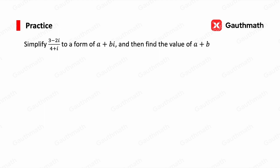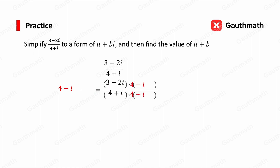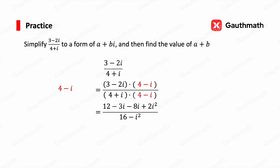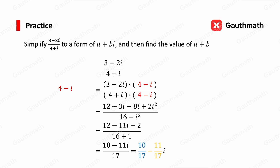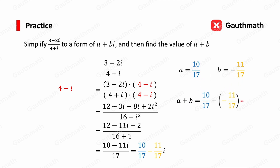Now for a practice problem: simplify (3 minus 2i) over (4 plus i) into the form a plus bi, then find a plus b. Step 1: the conjugate of 4 plus i is 4 minus i. Multiply both numerator and denominator by 4 minus i. Opening the bracket gives (12 minus 3i minus 8i plus 2i squared) over (16 minus i squared). Combining like terms: (12 minus 11i minus 2) over (16 plus 1), which is (10 minus 11i) over 17, or 10/17 minus (11/17)i. So a equals 10/17 and b equals negative 11/17, giving a plus b equals 10/17 plus (negative 11/17), which is negative 1/17.